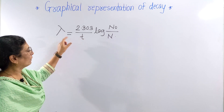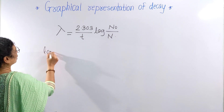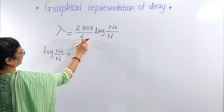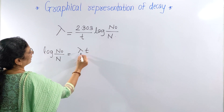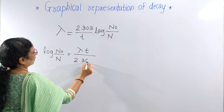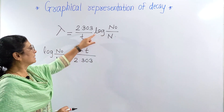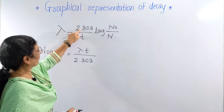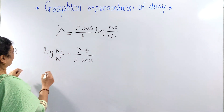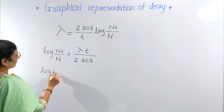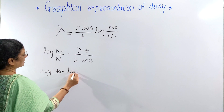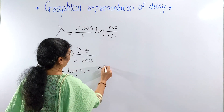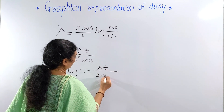Now if you rearrange this equation, you can obtain: log of N₀ upon N equals lambda times t upon 2.303. Then, log of N₀ minus log of N equals lambda times t upon 2.303.